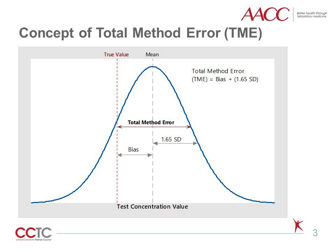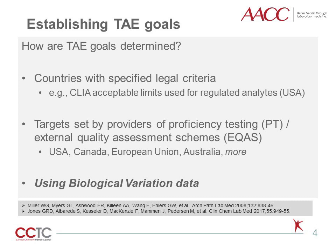Published biological variation estimates for a test analyte allow us to apply specific cutoff values to evaluate these components of method error, as illustrated in the figure. Establishing analytical quality goals for TAE has a rich history. These may be based on legal requirements such as CLIA laws in the United States, or set by providers of proficiency testing and external quality assessment scheme programs. As biological variation ranges differ across test analytes and improved estimates are readily accessible, there is renewed attention on establishing TAE goals using biological variation data. This is the focus of this pearl.